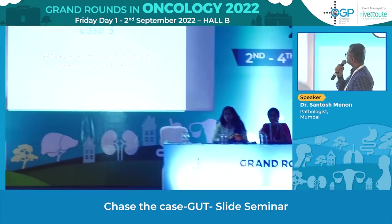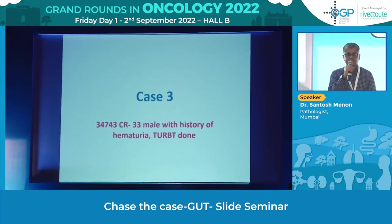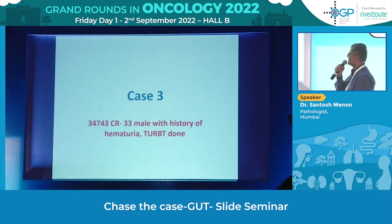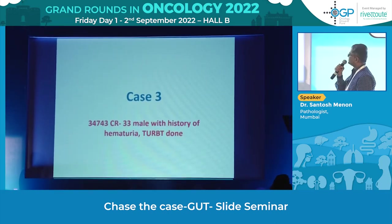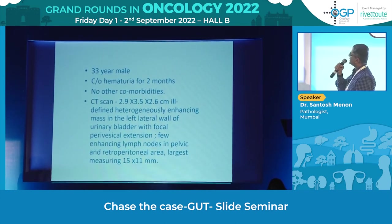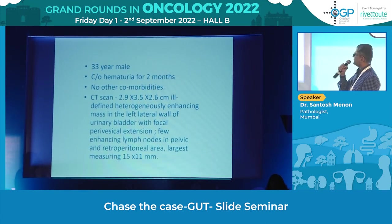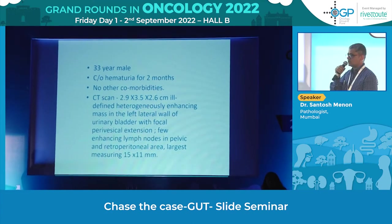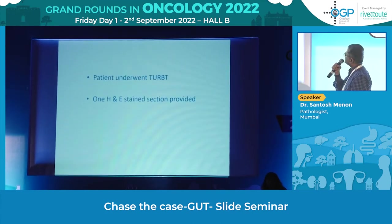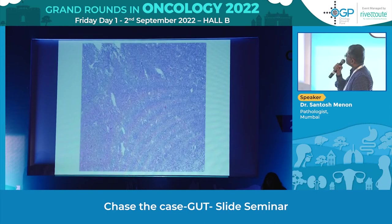The third and last case: a 33-year-old male with history of haematuria. TURBT was done elsewhere and CT scan showed a nearly defined heterogeneously enhancing mass in the left lateral wall of the bladder with focal perivesical extension, and some pelvic and retroperitoneal nodes. The patient underwent TURBT. At low power the TURBT chips showed a rather blue-looking tumour with lot of monomorphic tumour cells at this power.